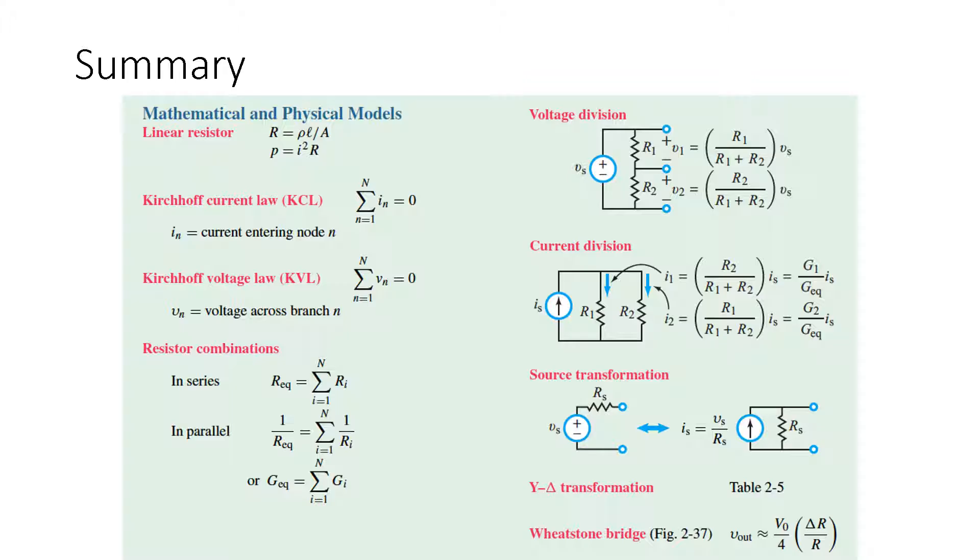Kirchhoff's current law essentially is saying that if you pick a node, the currents coming into the node have to equal the currents coming out of the node.